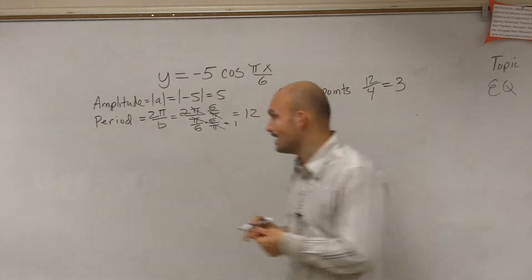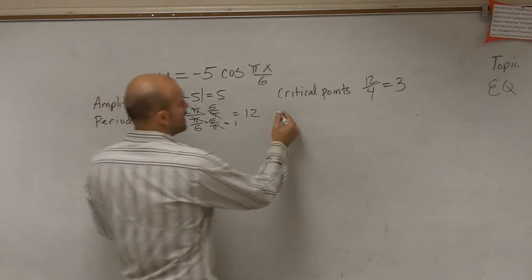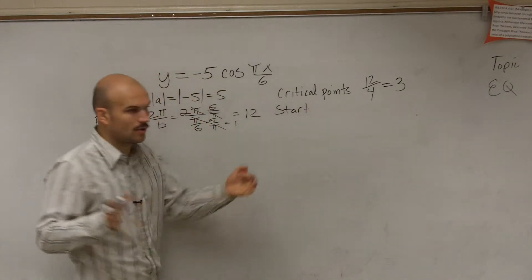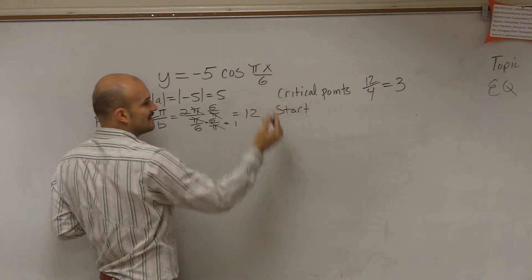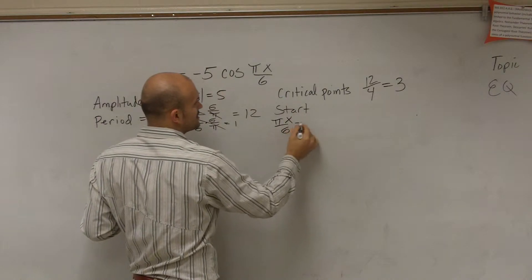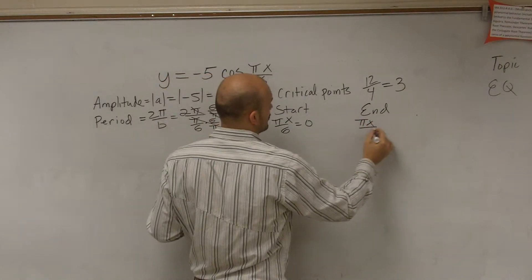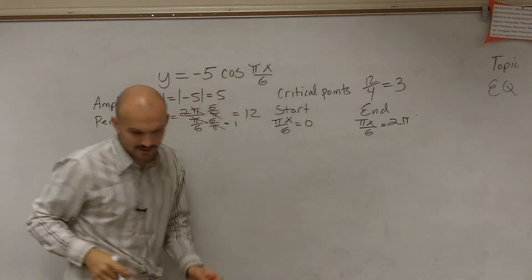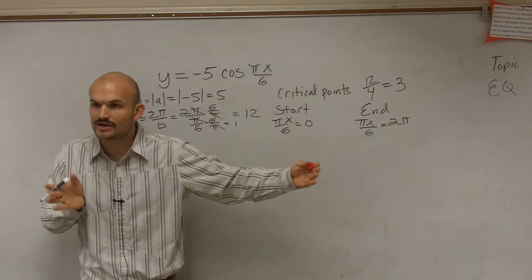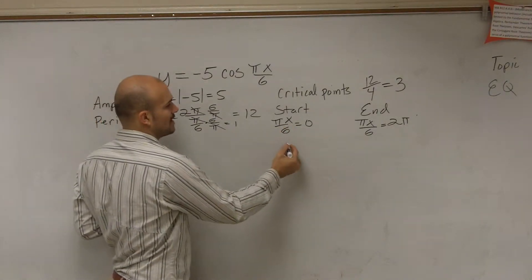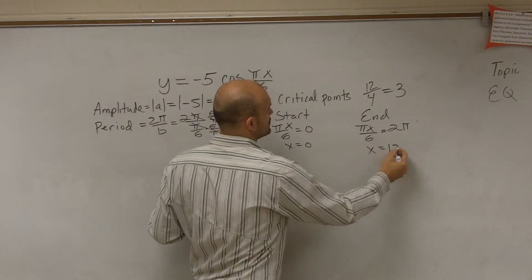The next thing is we find our start and our end. We want to see if there's any change in the start and the end. Usually what we like to do is start with one given period. The start is always found by taking what's inside your function and setting that equal to 0. So here I'm going to have pi x divided by 6 equals 0. And my end — I do the same thing but set it equal to 2 pi. By solving for x, I get x equals 0, and for the end I get x equals 12.